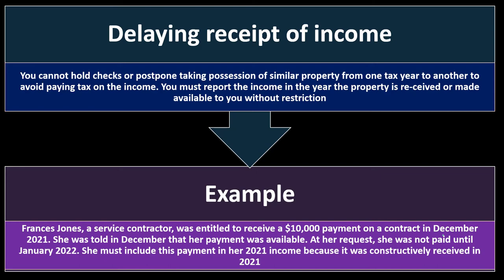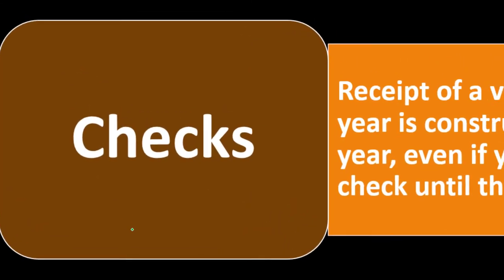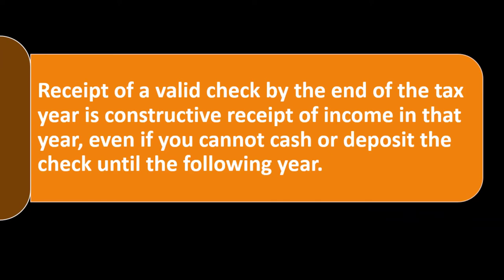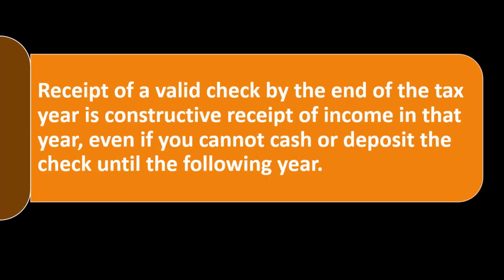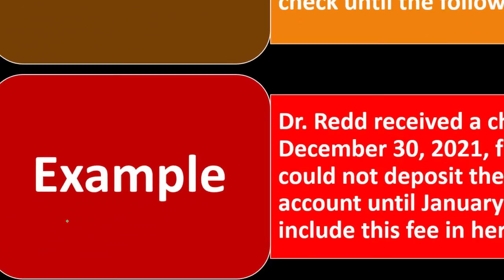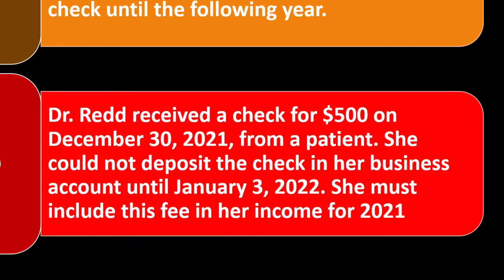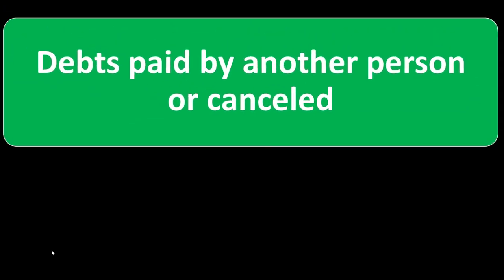Receipt of a valid check by the end of the tax year is constructive receipt of income in that year, even if you cannot cash or deposit the check until the following year — you cannot just hold on to the check. Example: Dr. Reed received a check for $500 on December 30th, 2021 from a patient. She could not deposit the check in her business account until January 3rd, 2022. She must include this fee in her income for 2021.